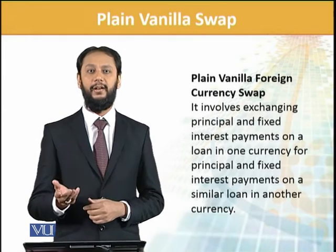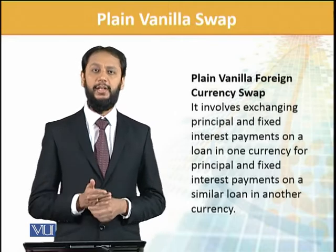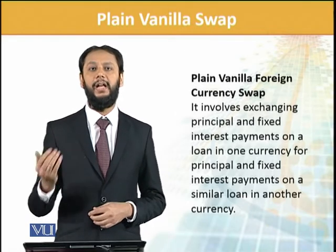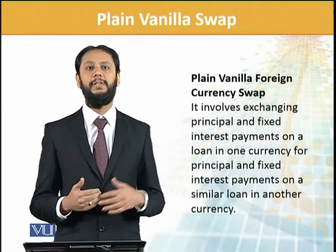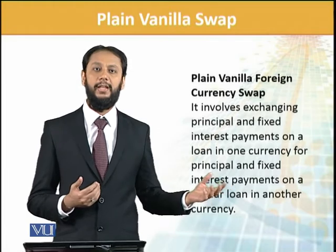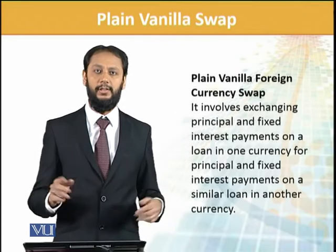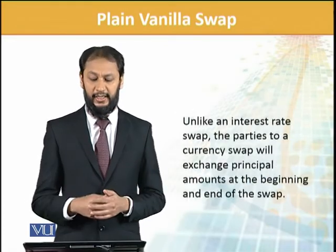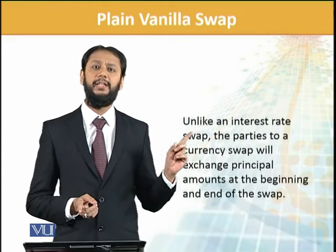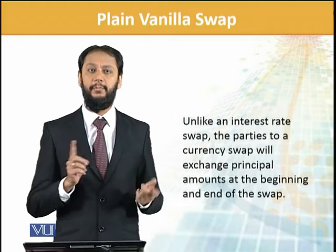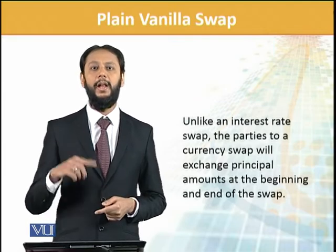We will now look at the plain vanilla foreign currency swap. When currency swap comes into discussion, things will be slightly different because two currencies are involved. At the beginning and at the end of the period, principals are also exchanged. For example, if two currencies are Pakistani Rupees and Japanese Yen, Rupees are given at the start, Yen are received, and the same happens in reverse at the end.